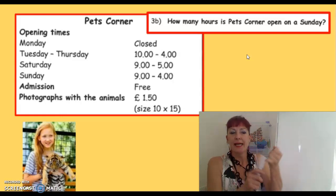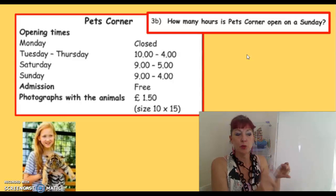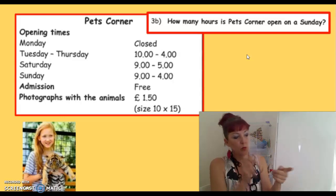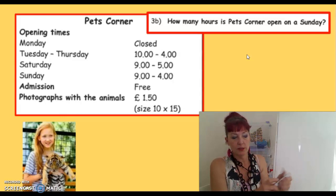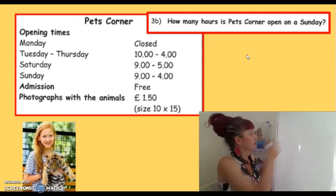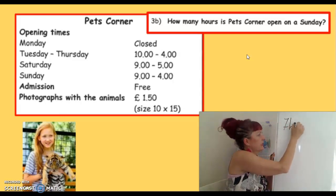10 o'clock, 11 o'clock, 12 o'clock. And then it goes to 1 o'clock, 2 o'clock, 3 o'clock, 4 o'clock — 7 hours. I'm going to jot that down: 7 hours.